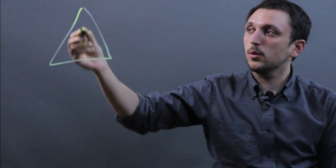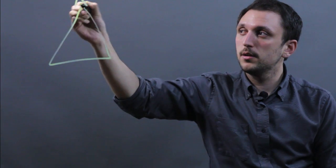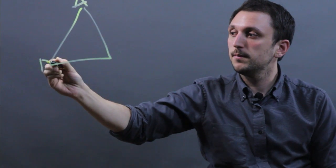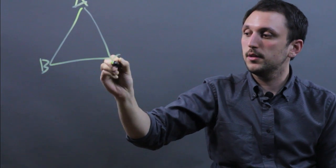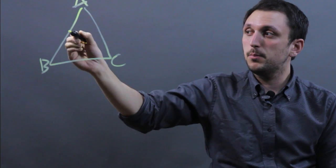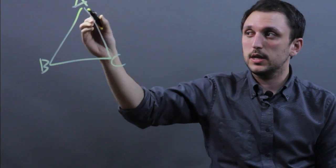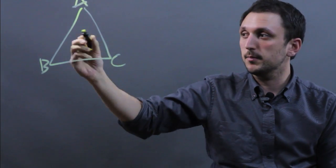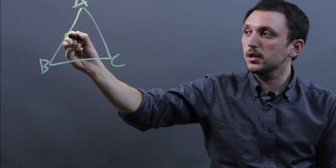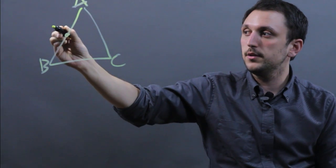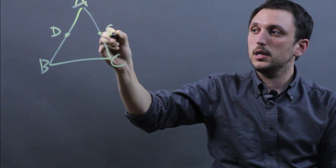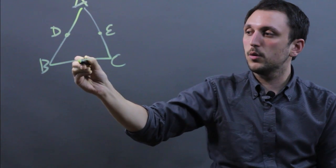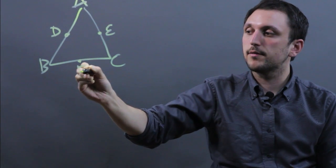First, let's draw a triangle. So here we'll have A, B, C. Now, the midpoints of each side are important in the mid-segment. So here we'll call this D, here we'll call this E, and here we'll call this F.